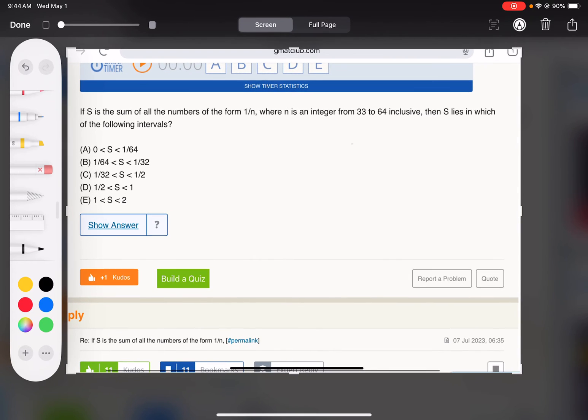So S is the sum of all the numbers of the form 1 over n, where n is an integer from 33 to 64. I mean, that is just a convoluted way of saying it's 1 over 33 to 1 over 64, and the sum of all the integers in here.